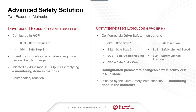Now let's take a look at the two execution methods for an advanced safety motion solution. First is drive-based execution. The parameters for the safety functions are configured in the drive module add-on profile. The available safety functions include Safe Torque Off and Safe Stop 1. Once configured and downloaded to the controller, the parameters for the safety function are fixed. Any changes would need to be done offline and then re-downloaded to the controller.